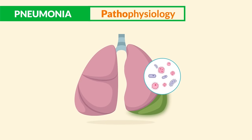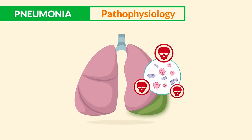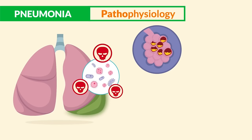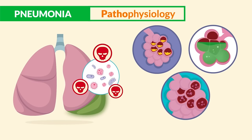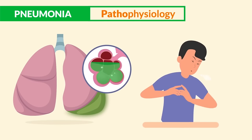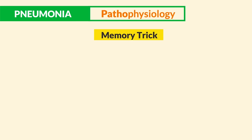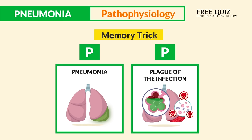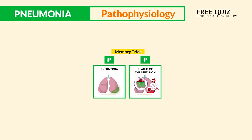Pneumonia is a nasty infection causing severe inflammation in the lungs and causing the alveoli to fill with mucus, fluid, and debris. This extra fluid can make it harder to breathe. The memory trick: think P for pneumonia as P for a plague of inflammation inside the lungs that fills the alveoli with fluid.